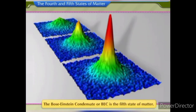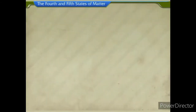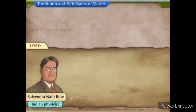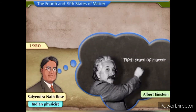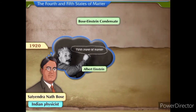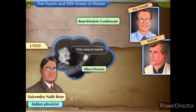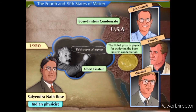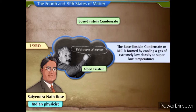The Bose-Einstein condensate, or BEC, is the fifth state of matter. In 1920, Indian physicist Satyendra Nath Bose made a study regarding the fifth state of matter. Based on his study, Albert Einstein predicted a fifth state of matter called the Bose-Einstein condensate. Scientists Eric Cornell and Carl Wieman of the USA received the Nobel Prize in Physics for achieving Bose-Einstein condensation. The BEC is formed by cooling a gas of extremely low density to super low temperatures.